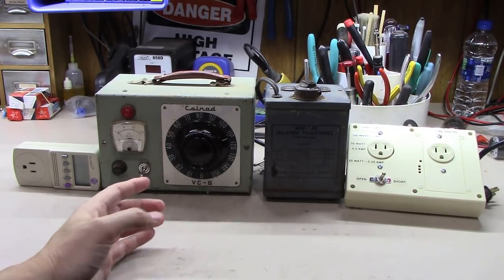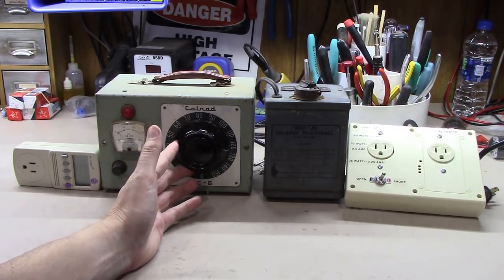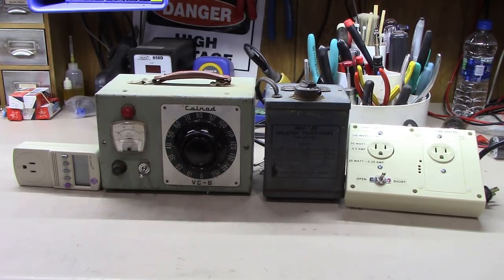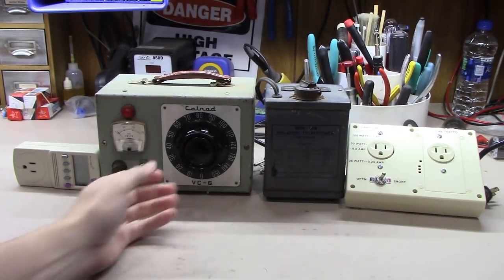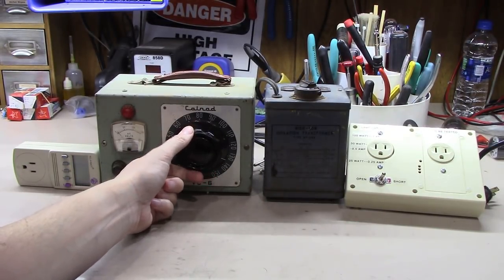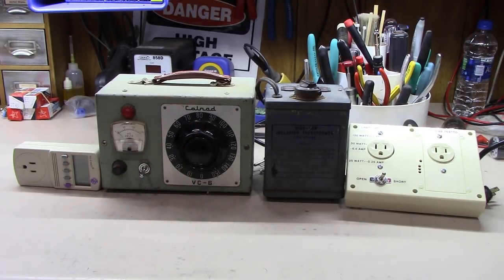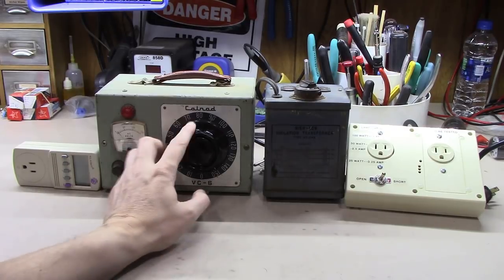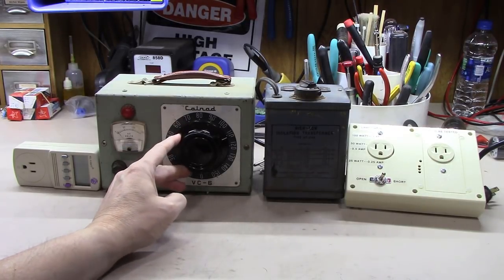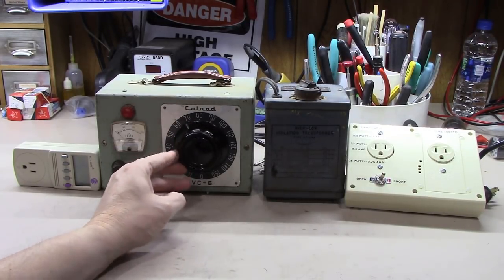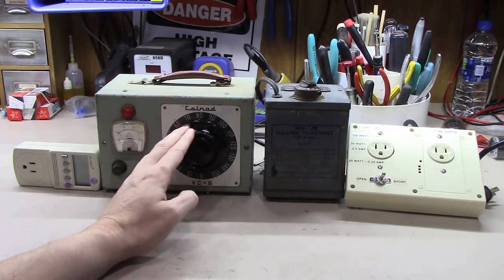One thing to be aware of with a Variac, though, you can actually go higher than the wall voltage. This unit acts like an auto transformer, and what it can do is take the voltage on the secondary higher than on the primary, so be careful when you're bringing a unit up. We'll talk more about how to bring a unit up here in a minute.